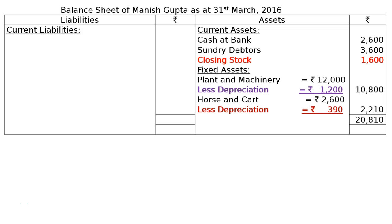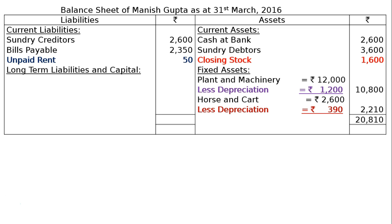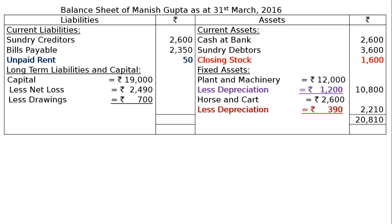Now the liabilities side: current liabilities — sundry creditors Rs. 2600, bills payable Rs. 2350, outstanding rent Rs. 50 (it was added to rent in the P&L account and also shown under current liabilities). Long-term liabilities and capital: capital Rs. 19,000, less net loss Rs. 2490 (loss reduces capital), less drawings Rs. 700 (given in the question), giving a final capital figure of Rs. 15,810.